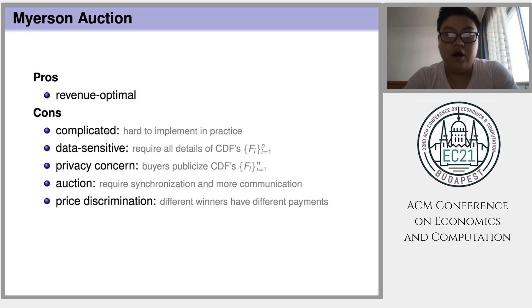However, Myerson Auction still suffers from several disadvantages. First of all, Myerson Auction has rather complicated rules, so it is hard to implement in practice. Second, to implement Myerson Auction, the seller requires all details of the buyer's value distributions.